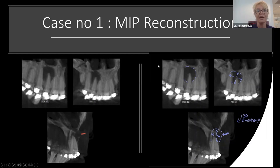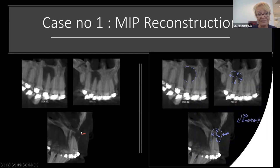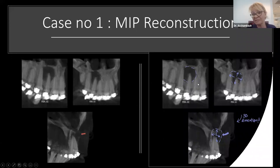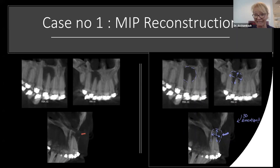In case number one, on the MIP reconstruction, you can see involvement of the buccal cortex — it's enlarged, it's thin. There is a pathology creating expansion. The vitality tests were done; that tooth was necrotic. You have here a very classical appearance of a radicular cyst.